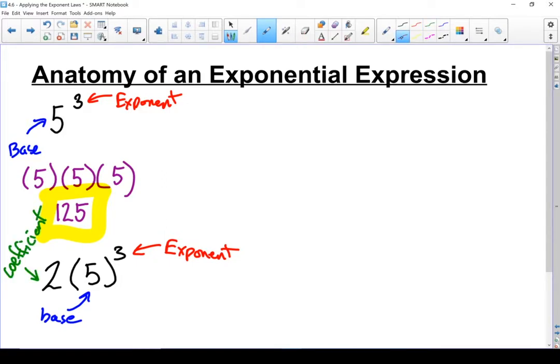I would write this out as, I'm going to write my coefficient first because that is not taken to the power of 3, and then three 5s, which ends up being 2 times 5 times 5 times 5. 5 cubed is 125, times it by 2, we've got 250.